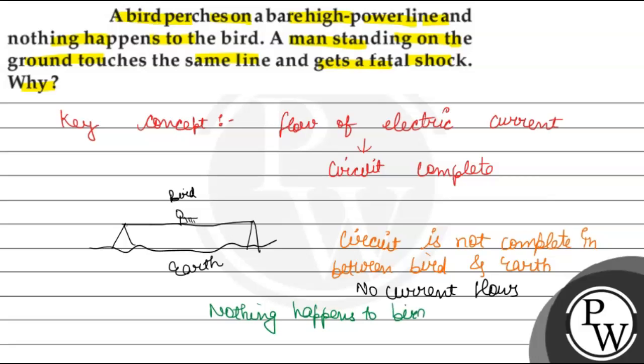Now in the same case, if a man is standing on earth and touches the line, what happens? When he touches it, the circuit becomes complete.